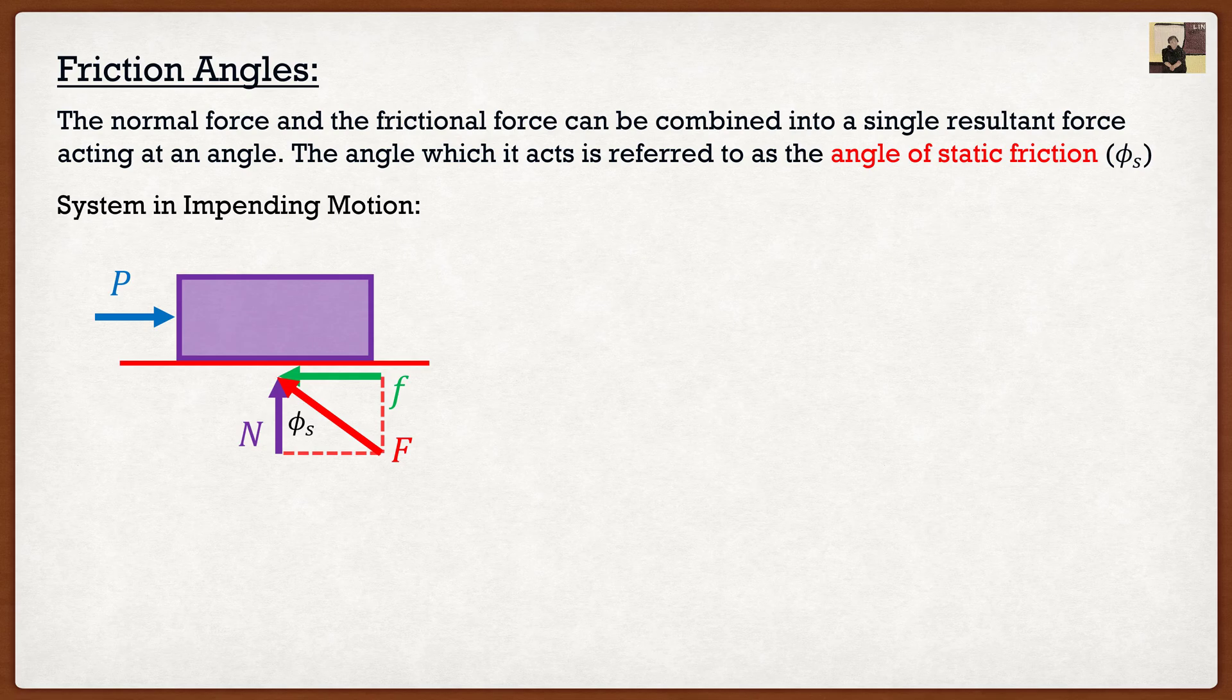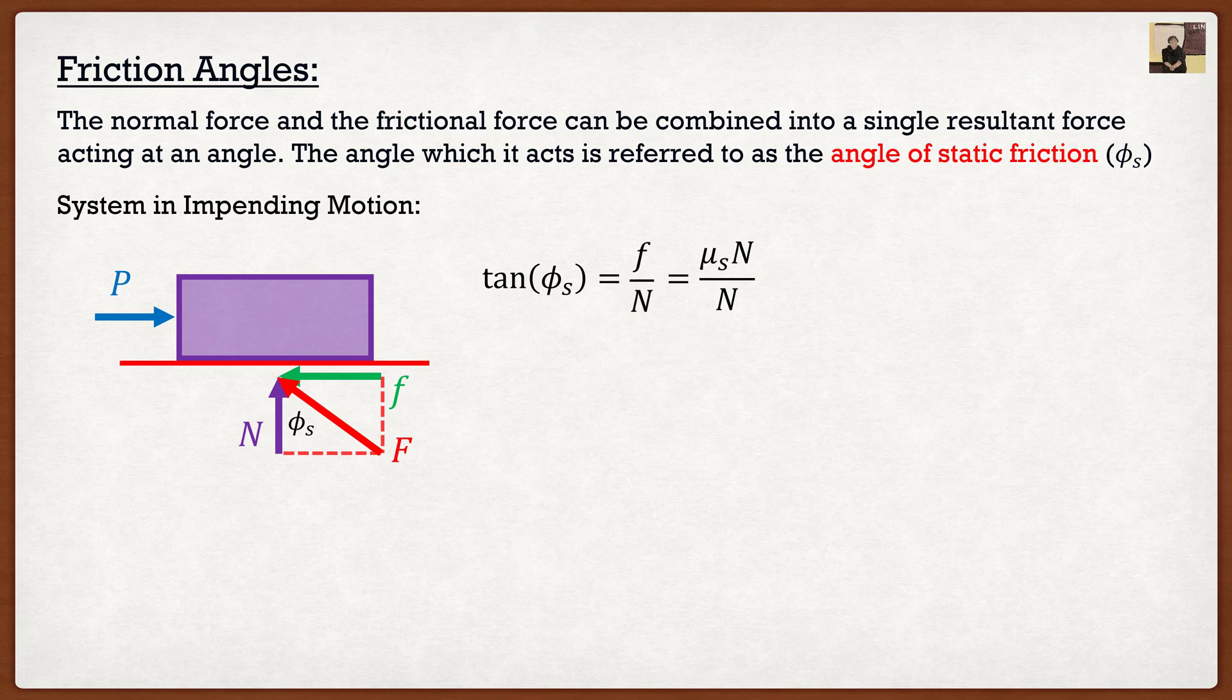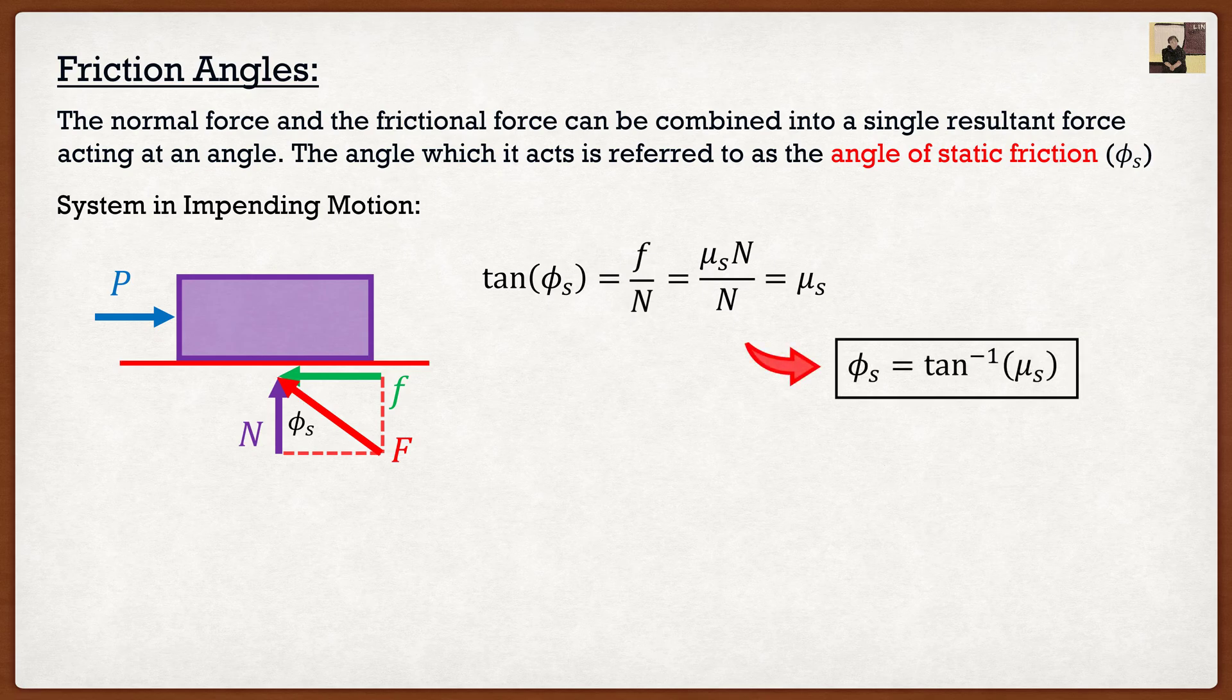And if we were to analyze this, we know that if we go tangent of the angle, it's equal to f divided by N, which we know is equal to μ_s times N. The N's cancel, so it's just equal to μ_s. So if I want the angle of static friction, all I have to go is inverse tangent of μ_s.